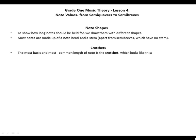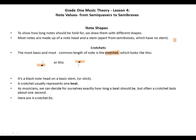Crotchets. The most basic and most common length of note is the crotchet, which looks like this - head down or head up. A crotchet is a black note head on a basic stick or stem. A crotchet usually represents one beat. As musicians, we can decide for ourselves exactly how long a beat should be, but often a crotchet lasts about one second. Here are four crotchets. This is how we write a crotchet, with the head down. And this is the stem. All four have stems.